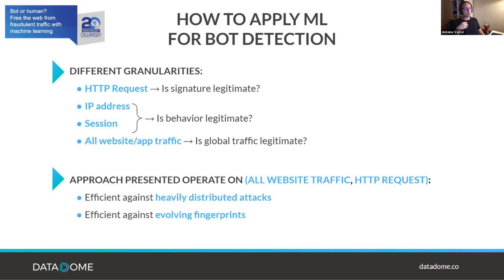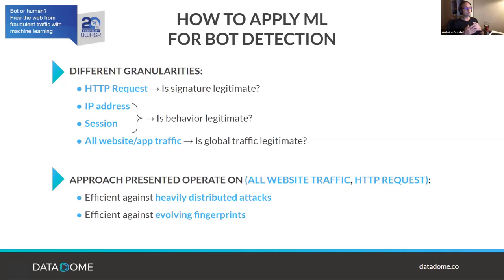Machine learning for bot detection can be applied at different granularities. We can apply it on each HTTP request to classify whether a signature is legitimate. We can apply it on IP addresses or sessions to observe whether behavior can be linked to bot activity. We can also observe the whole traffic of a website or mobile app to determine if globally the traffic changed and is linked to malicious activity.